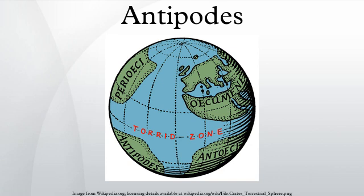Etymology: the Greek word is attested in Plato's dialogue Timaeus, already referring to a spherical Earth, explaining the relativity of the terms 'above' and 'below.' Plato wrote: 'For if there were any solid body in equipoise at the center of the universe, there would be nothing to draw it to this extreme rather than to that, for they are all perfectly similar. And if a person were to go round the world in a circle, he would often, when standing at the Antipodes of his former position, speak of the same point as above and below.'